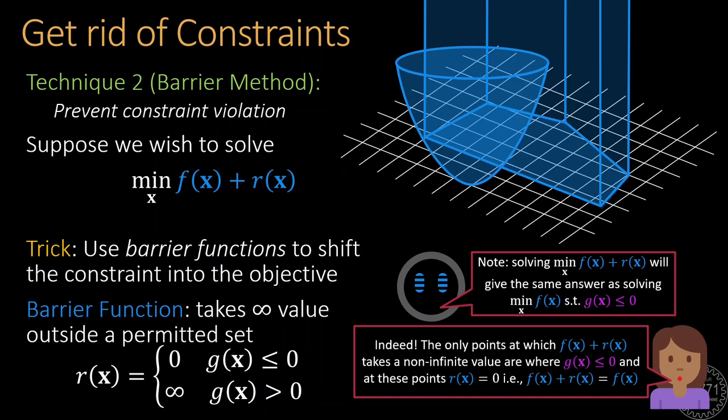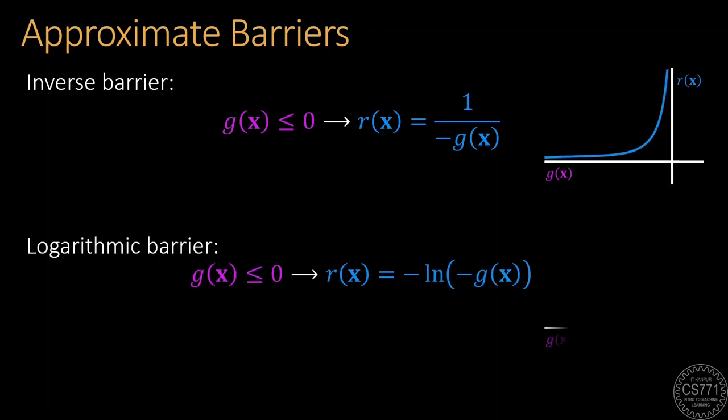Let us now see how to create such barrier functions. The simplest and most popular barrier functions are the inverse barrier and the logarithmic barrier functions. These are approximate barrier functions since they don't exactly take the value 0 inside the feasible set.